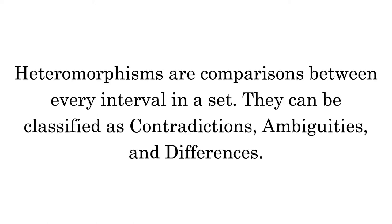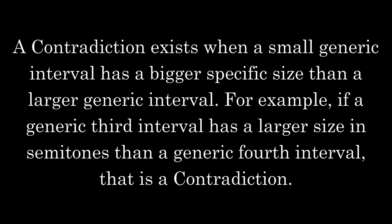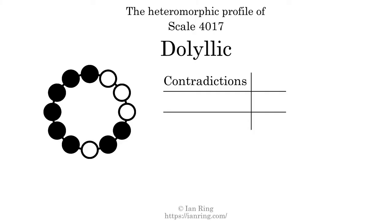Heteromorphisms are comparisons between every interval in a set. They can be classified as contradictions, ambiguities, and differences. A contradiction exists when a small generic interval has a bigger specific size than a larger generic interval — for example, if a generic 3rd interval has a larger size in semitones than a generic 4th interval. The number of contradictions in this scale is 75.